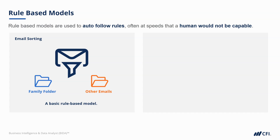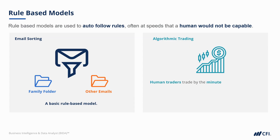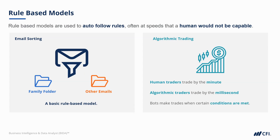At the other end of the spectrum, let's think about algorithmic trading — a classic example of rule-based models. Where traders used to make trades manually minute by minute, algorithmic traders are able to trade by the millisecond. If you can be the first to act on new information, that puts you at an advantage. Algorithms trade based on pre-programmed rules and make decisions when conditions are met. The stakes are so high in this world of high-frequency trading that every millisecond counts.